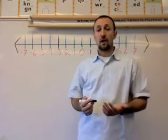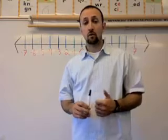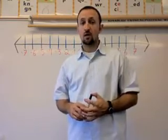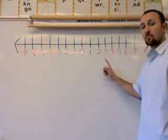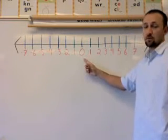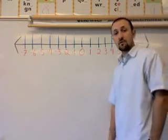But before we start adding integers, I want to look at something that's called an absolute value. And the way we find an absolute value is simply picking a number on the line and counting back how many places it takes us to get to zero. The number of places it takes us to get back to zero is the absolute value for that number.